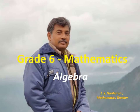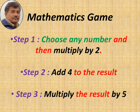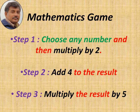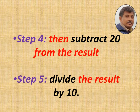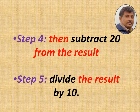Dear learners, how are you feeling today? Hope you are feeling good and doing well. Let us discuss algebra using a game and see how we use variables. The steps are: choose any number, multiply by 2, add 4, then multiply the result by 5. Then subtract 20 from the result, then divide the result by 10. What do you get? Your answer will be the same number you chose.